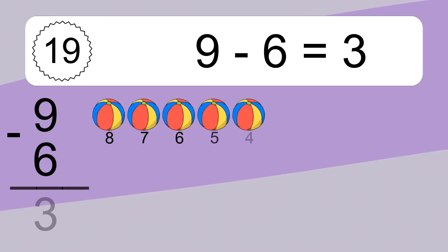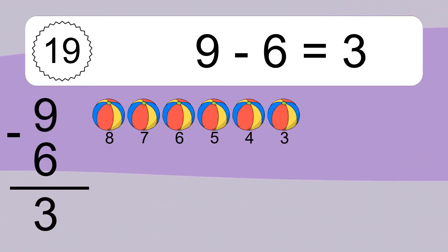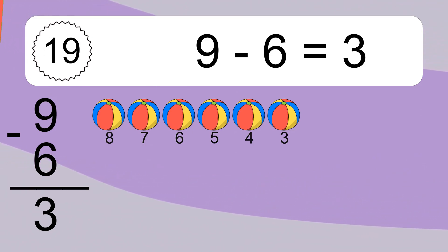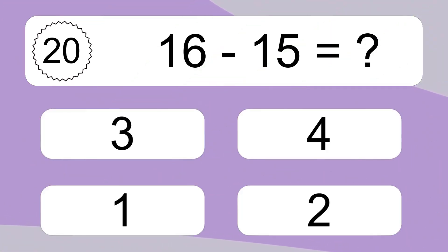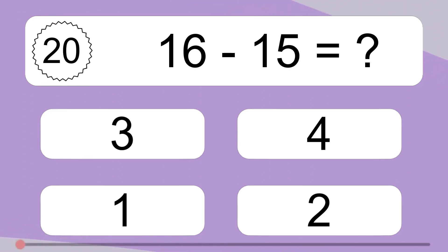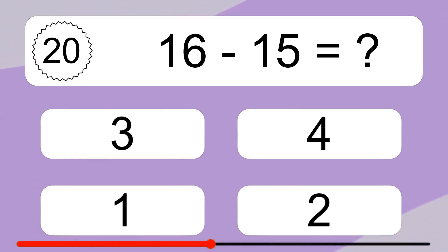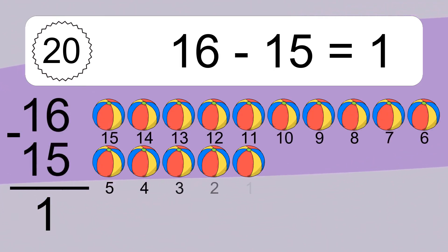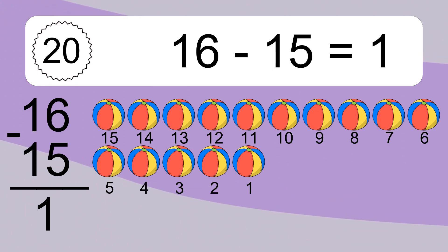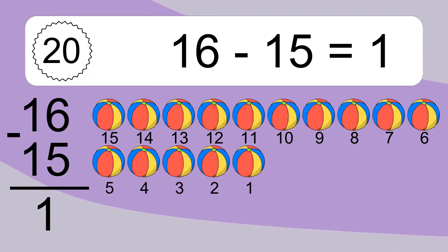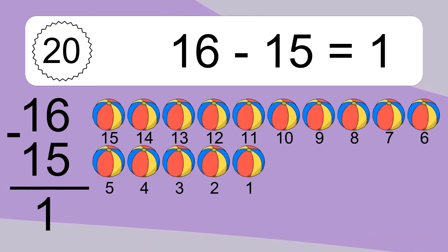9 minus 6 equals what? 9 minus 6 equals 3. Let's count it: 8, 7, 6, 5, 4, 3. 16 minus 15 equals what? 16 minus 15 equals 1. Let's count it: 15, 14, 13, 12, 11, 10, 9, 8, 7, 6, 5, 4, 3, 2, 1.